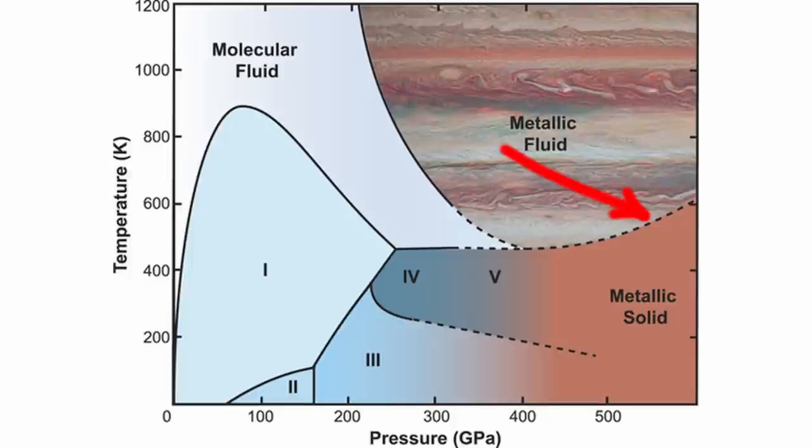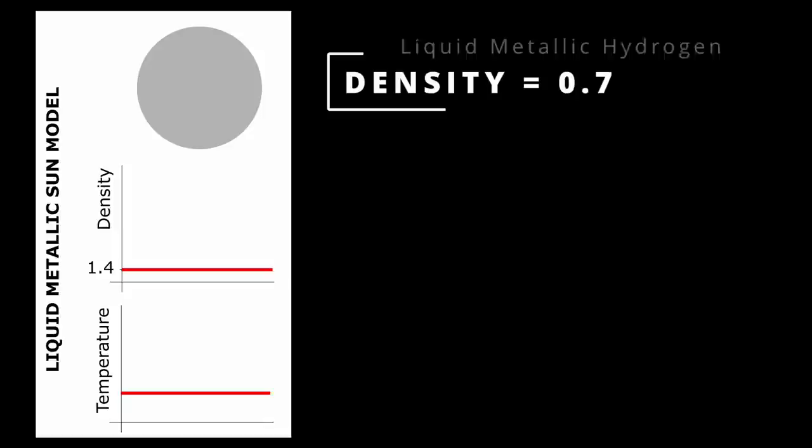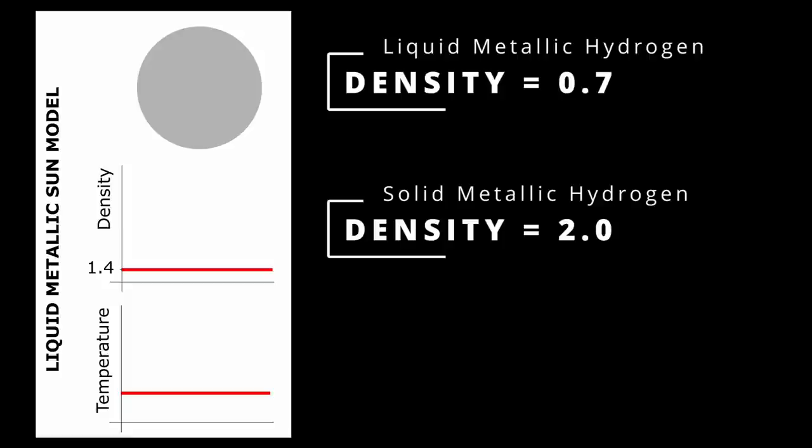As I pointed out earlier not much is known about the theoretical states and hence density values equally vary. Some state a predicted value for liquid metallic hydrogen as 0.7 g per cm³ and for solid metallic hydrogen some go up as high as 2 g per cm³.